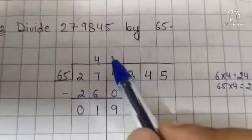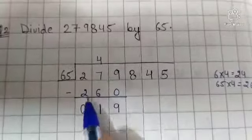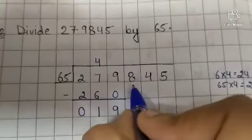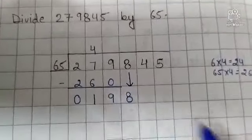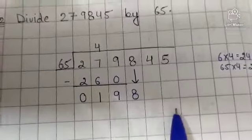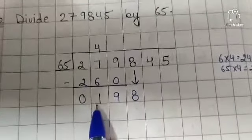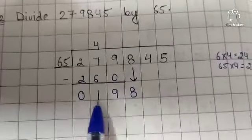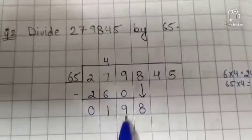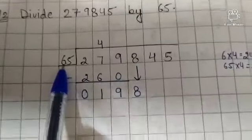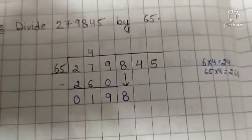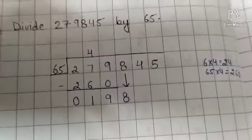So take 4 in quotient and subtract 260 from 279. Now bring down 8. Now the number is 198. Take the first two digits of 198 which is 19 and divide it by 6.